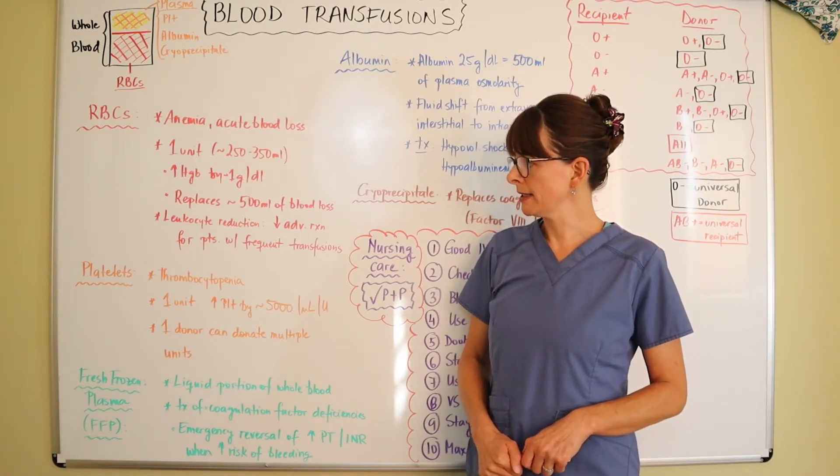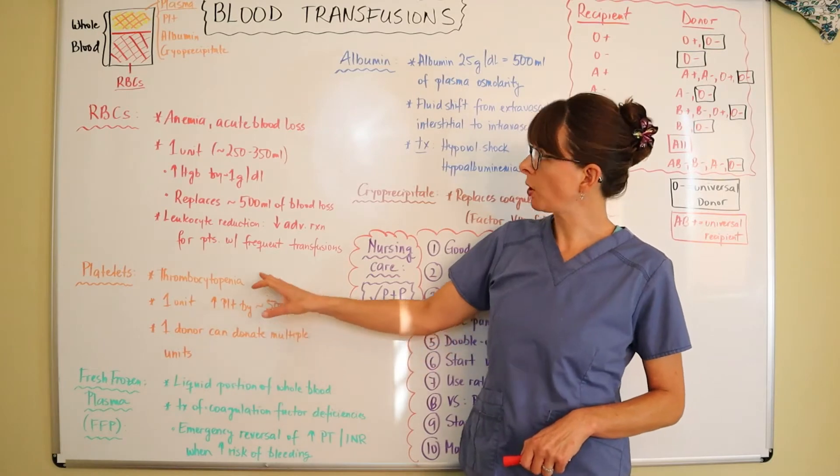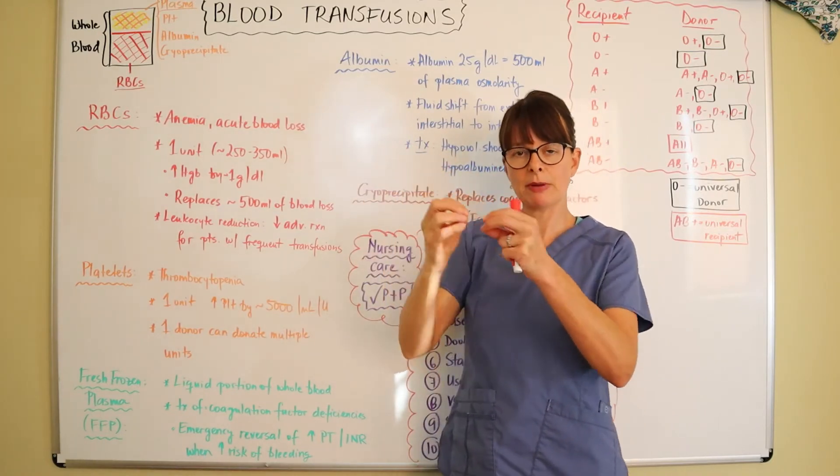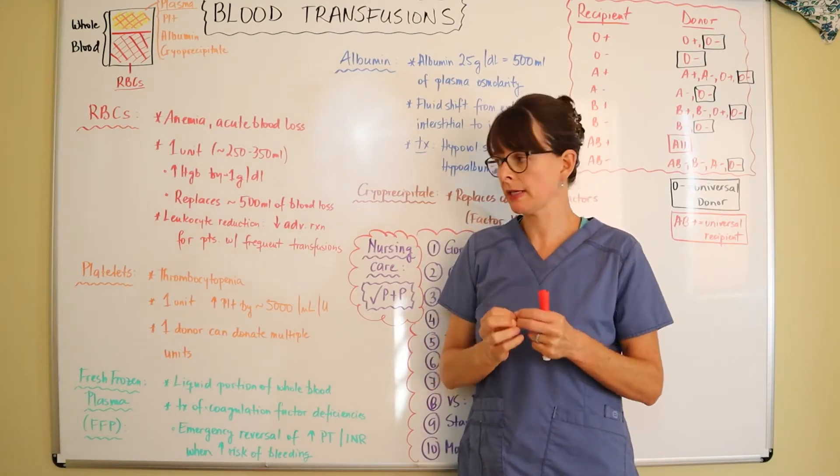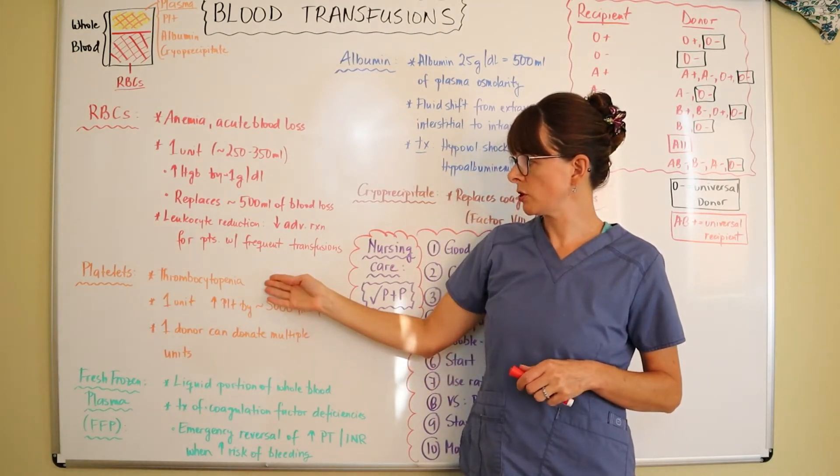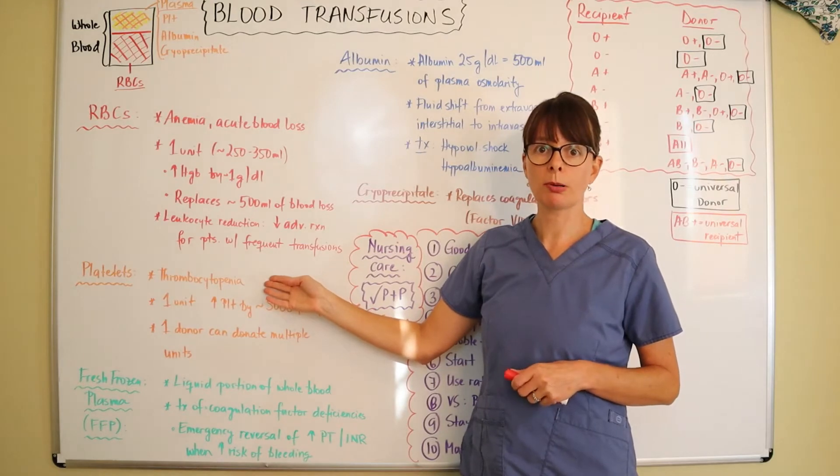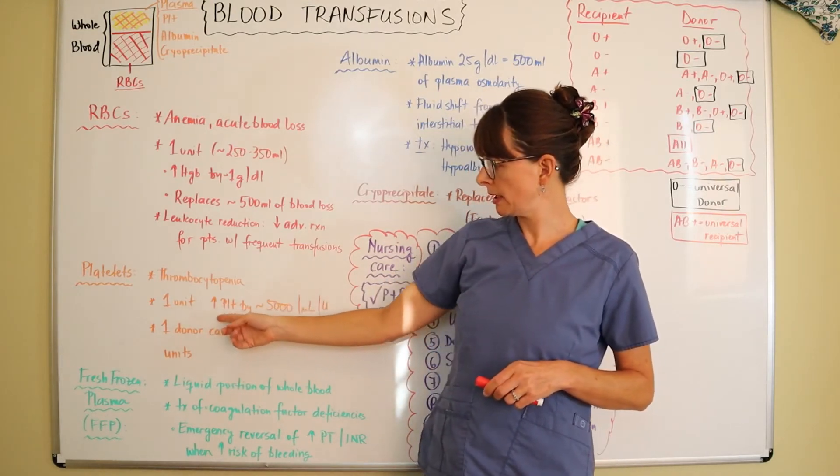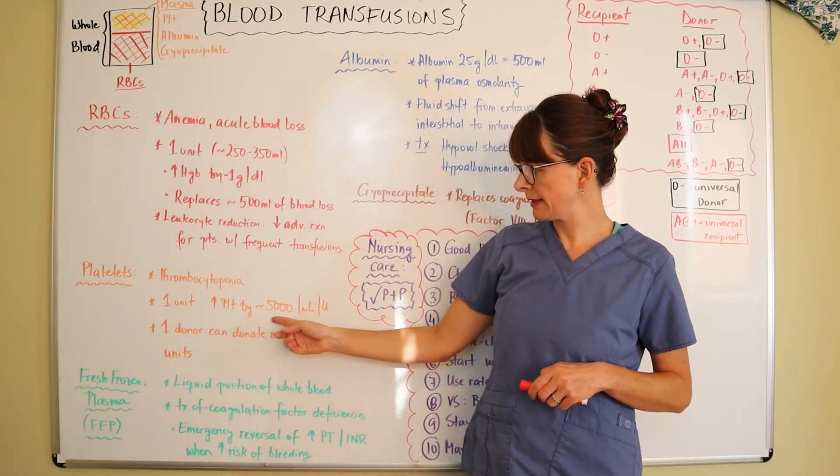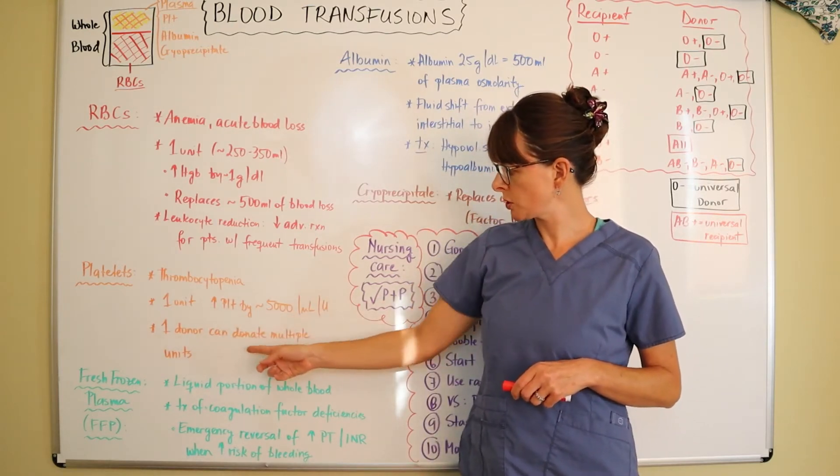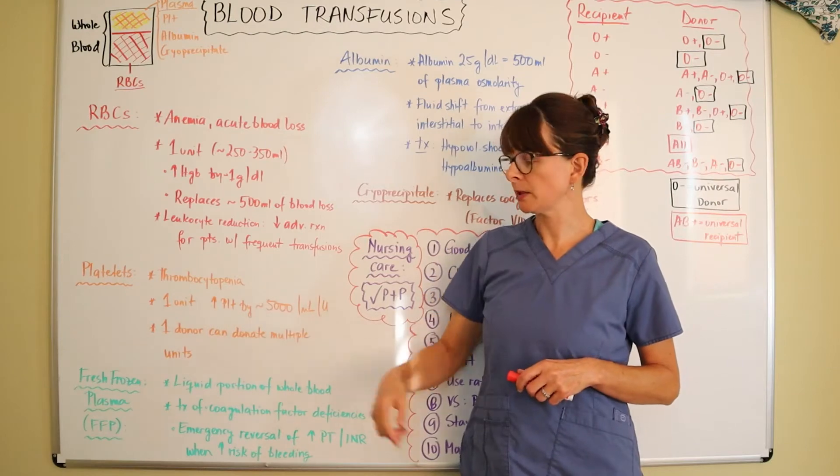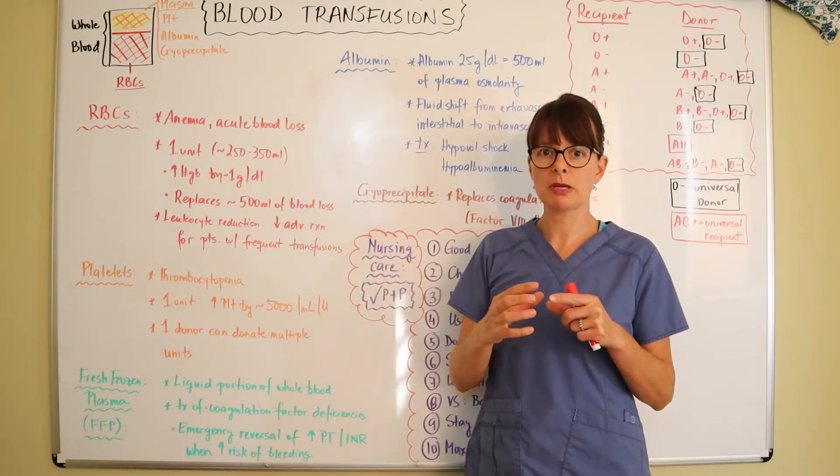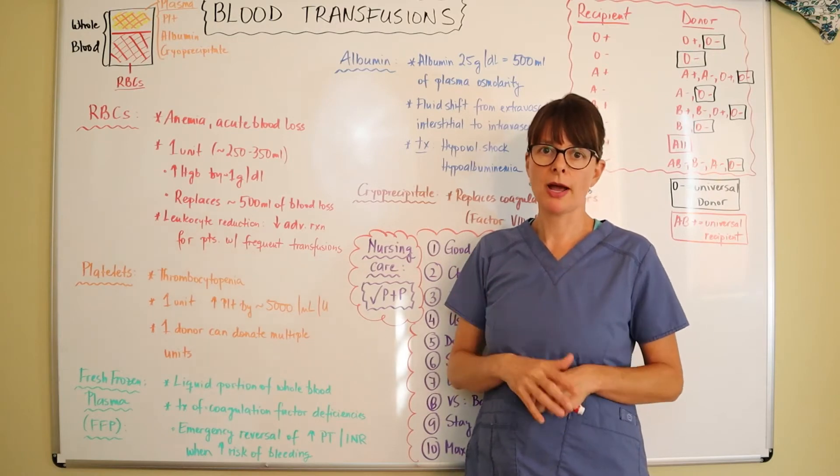Platelets are a part of the plasma, but the lab can filter out only the platelets. The treatment indication is thrombocytopenia, or low platelet count. One unit of platelets can increase the platelets by about 5,000. One donor can donate multiple units. The platelet bags usually are a lot smaller than the packed cells, maybe anywhere from 50 to 100 ml.